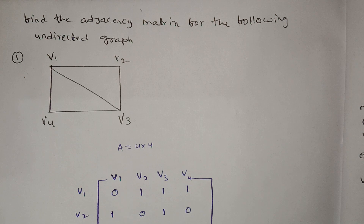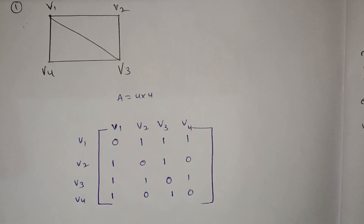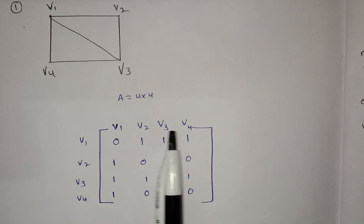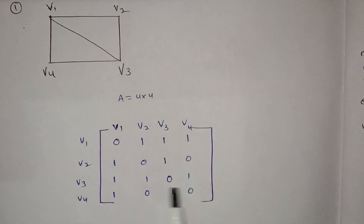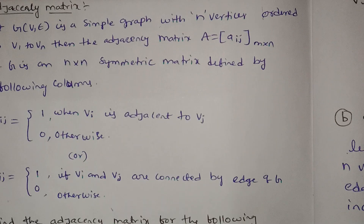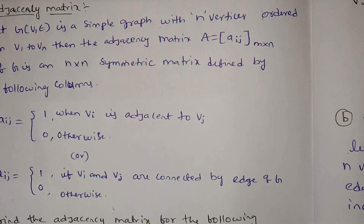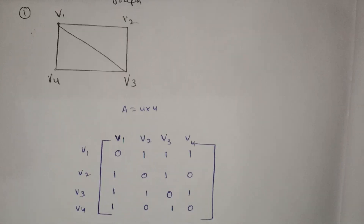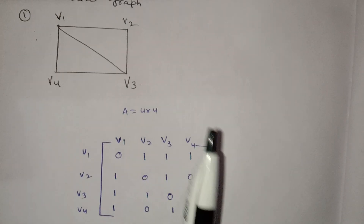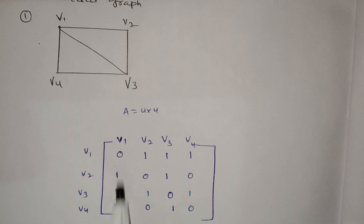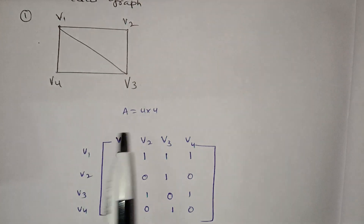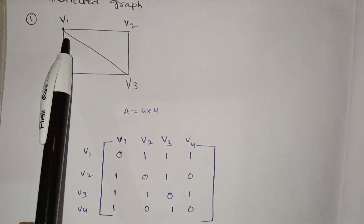Now I will show you the matrix. The rows and columns are V1, V2, V3, V4. This is an M by N matrix, and I will show you the columns.